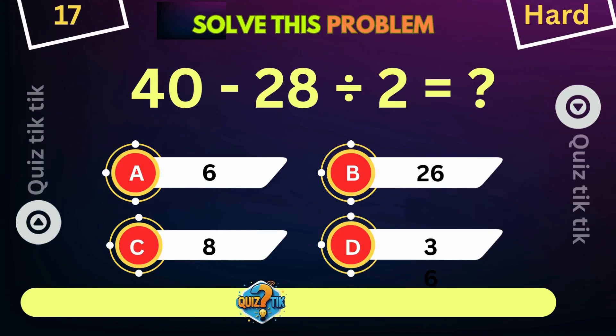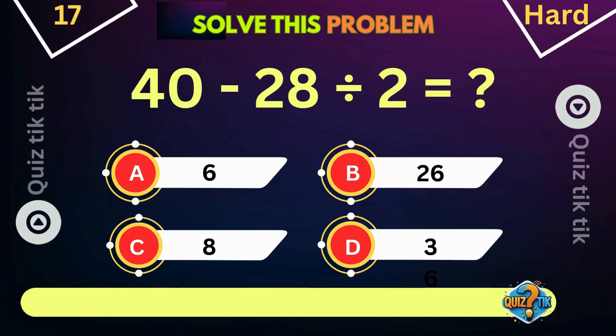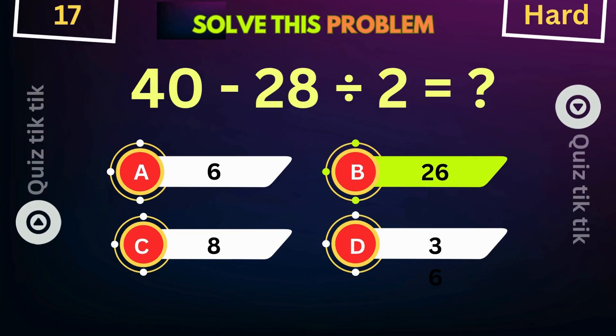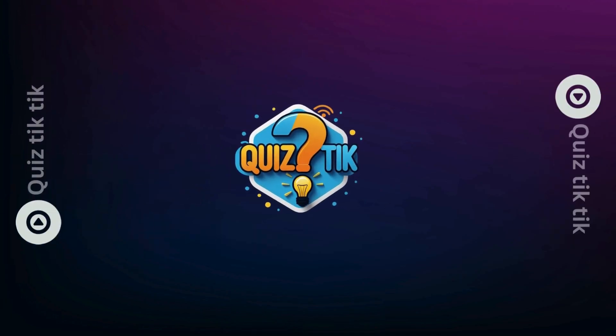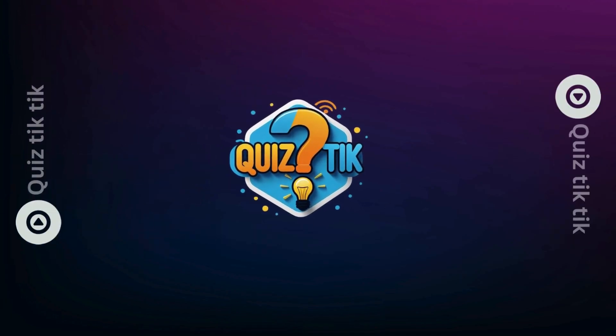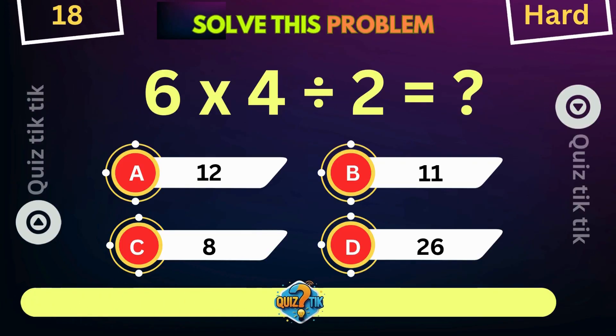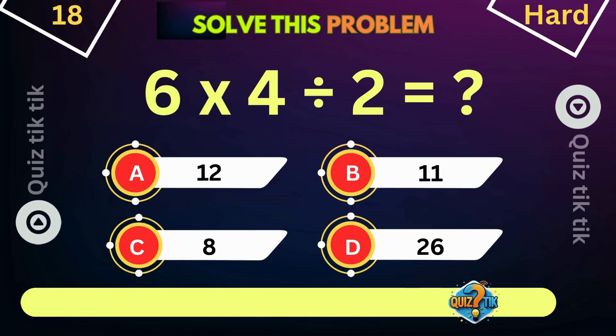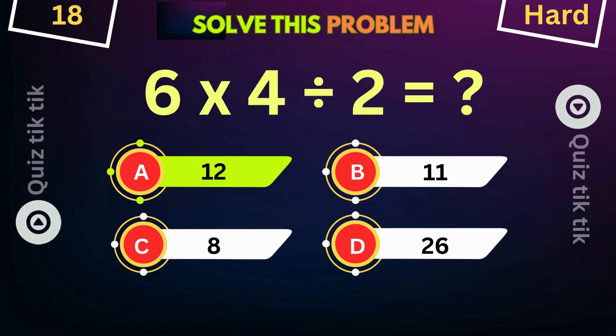40 minus 8 divided by 8 is equal to. 6 times 4 divided by 8 is equal to.